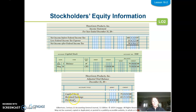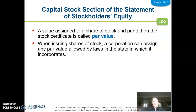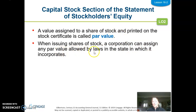The things we're looking at on this statement of equity are capital stock and retained earnings. The capital stock section is the first section we'll talk about. A value assigned to a share of stock and printed on the stock certificate is called the par value. We would have a par value listed for every type of stock — common stock, preferred stock. That is a stated amount. We can assign any par value that's allowed by the laws of the state in which the company incorporates. If you take advanced accounting, you'll learn a whole lot more about this.